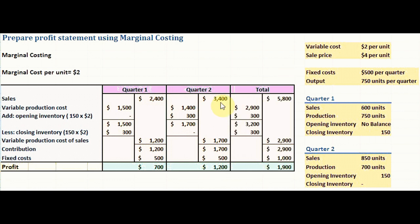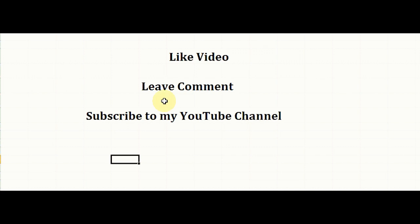Total for quarters one and two: sales were $5,800, variable production cost was $2,900, contribution was $2,900, fixed cost was $1,000, and total profit was $1,900 across both quarters. The profit statement using marginal costing is now complete. Thank you for watching — please leave a comment and subscribe to the channel.